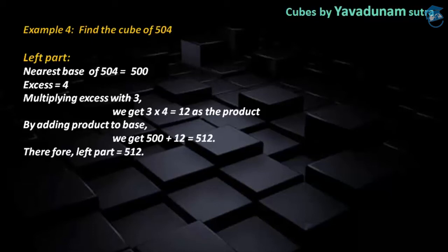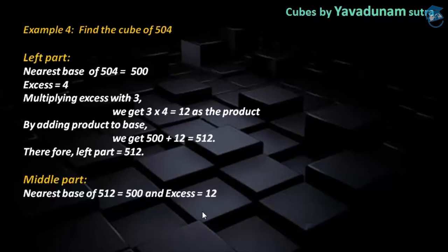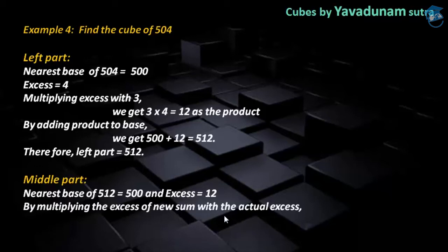After completing the left part and moving to the middle part, the first step is we have to take the answer from the left part and find the nearest base as well as Xs. The nearest base of 512 is 500 and the Xs is 12, found by comparing 512 with 500. Now in step 2, we have to multiply the new Xs, that is 12, with the actual Xs, that is 4. So 12 into 4 gives us 48, and this 48 is regarded as the required middle part.